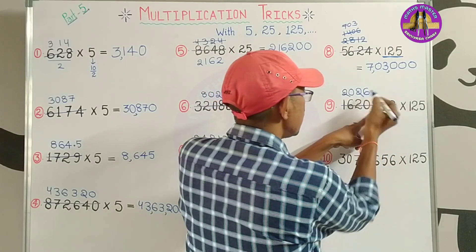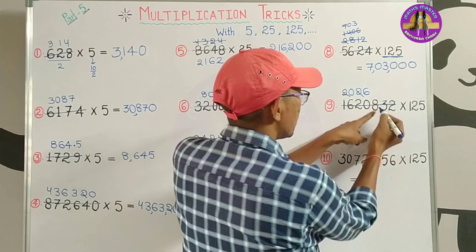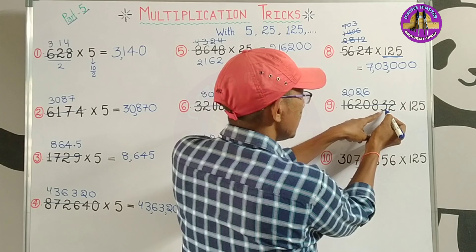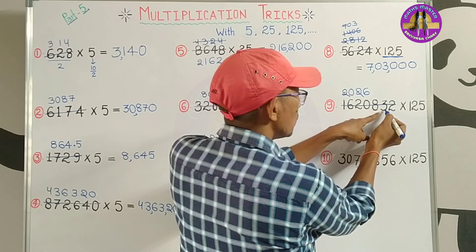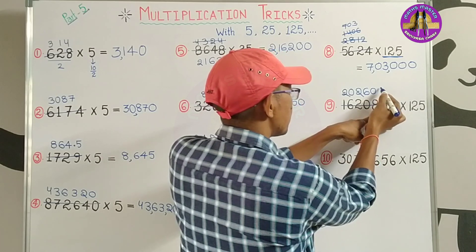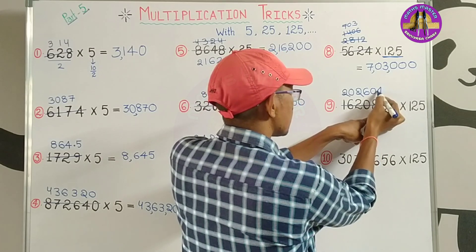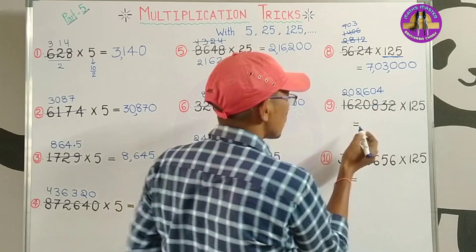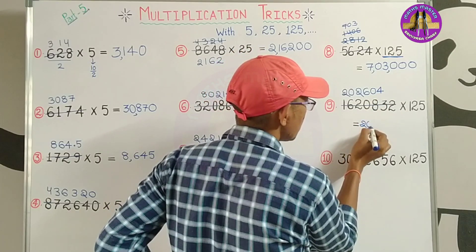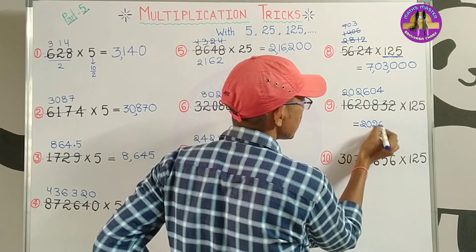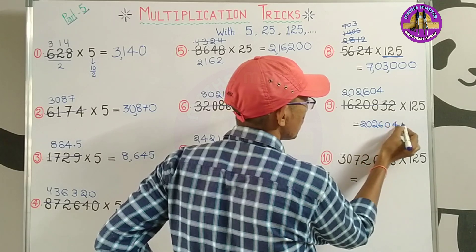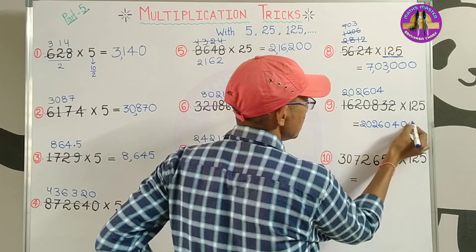Next digit: 8, 6, 0, 48. So the answer becomes 20,26,04,000.